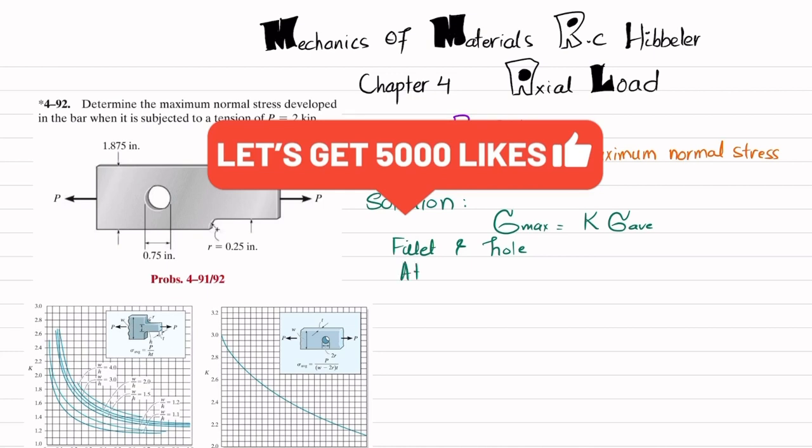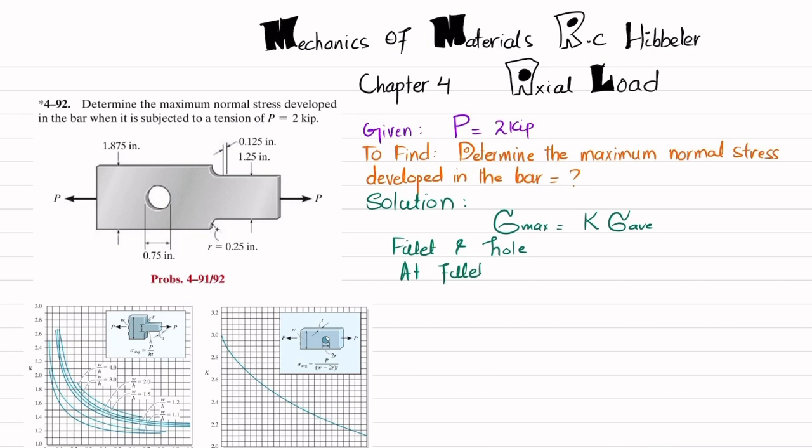What we are going to do is we will find K for the fillet and K for the hole. First, we will find it at the fillet. Before that, we have to write some values. You can see in this figure: this is w, this is h, this is the radius of the fillet, and this is 2r which is the diameter of the hole.